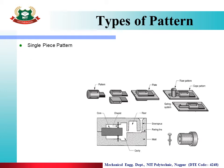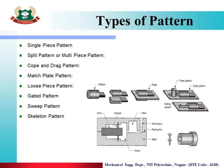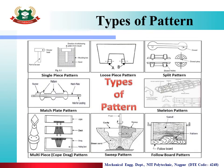The casting product looks just like the original pattern. Now let us see the types of patterns: single piece pattern, split pattern, multi-piece pattern, cope and drag pattern, match plate pattern, loose piece pattern, gated pattern, sweep pattern, skeleton pattern, and follow board pattern. Different types of patterns are used to produce different mold cavities, and from those mold cavities, the casting product is obtained.